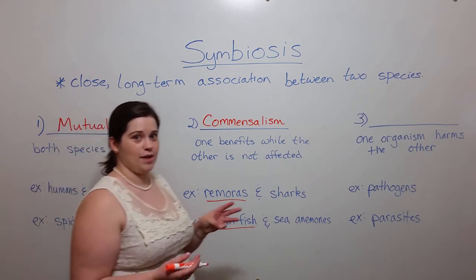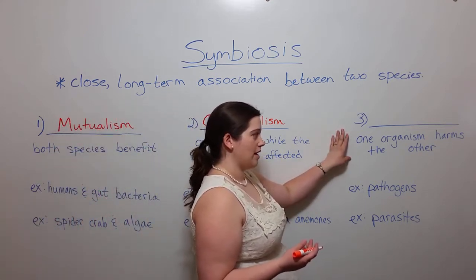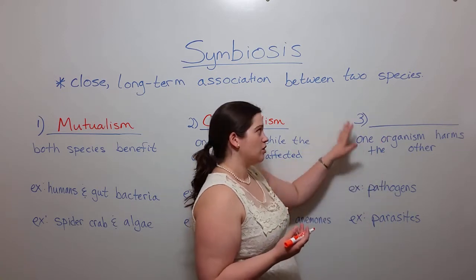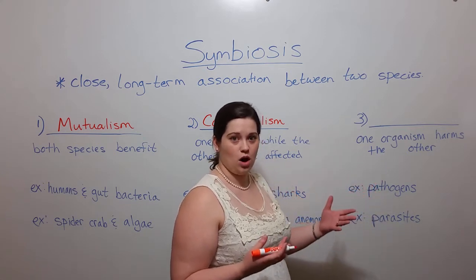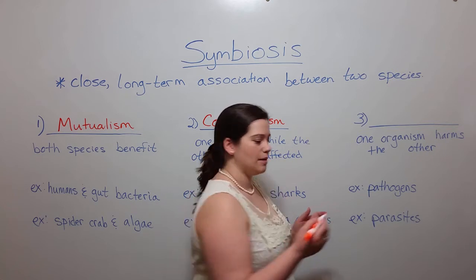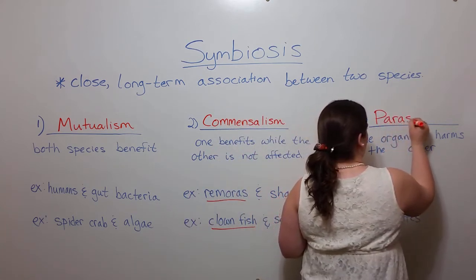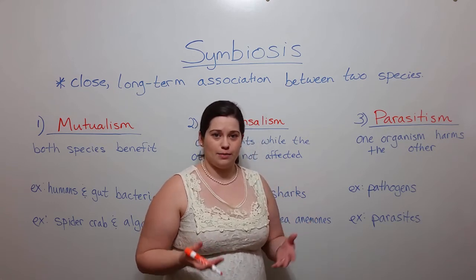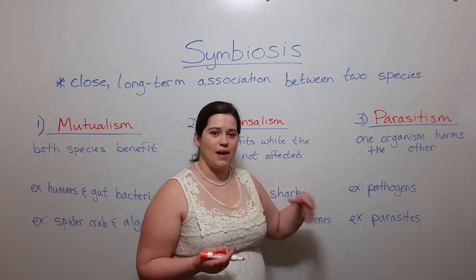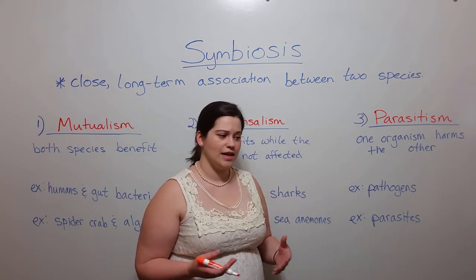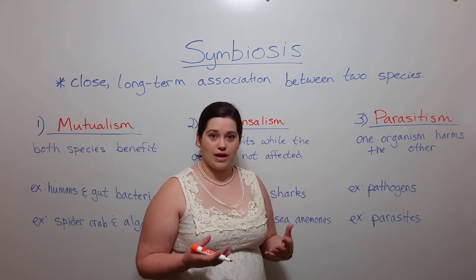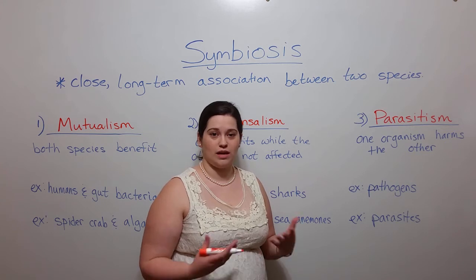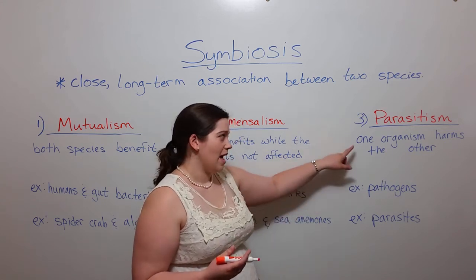Now let's talk about the third type of symbiosis. This is actually when one organism directly harms the other, meaning that one organism — the one that's doing the harming — benefits in some way, and the association is detrimental to the other species, the one that is harmed. This type of symbiosis is called parasitism. There are many examples of parasitism that I'm sure you're familiar with. This includes a variety of pathogens — bacterial pathogens, viral pathogens, fungal pathogens — that will invade a host and cause disease during their replication, and as they steal various nutrients from the host, or kill host cells, or work in a variety of other ways that harms the host.